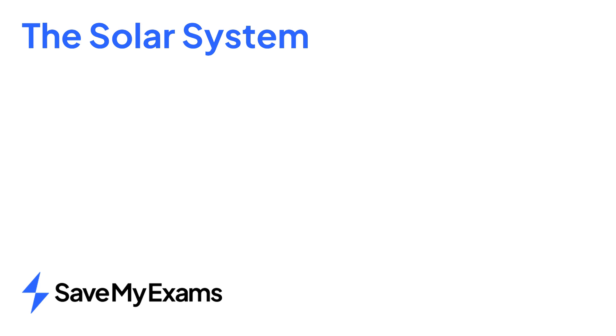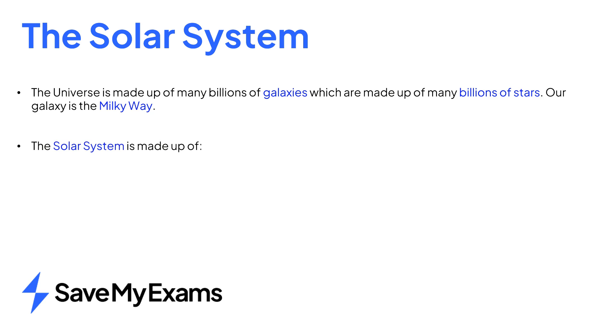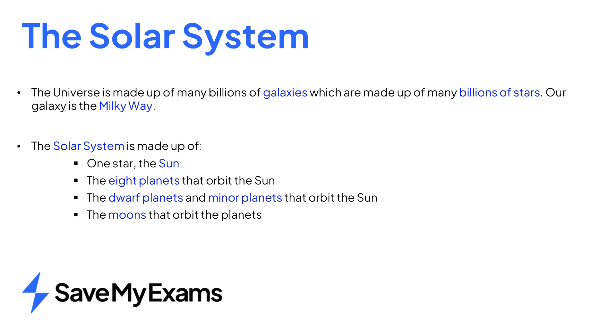In summary, the universe is a large collection of galaxies, and a galaxy is a large collection of stars. We live in the Milky Way galaxy in a solar system which contains the sun, eight planets, dwarf planets and minor planets, moons, and smaller objects such as comets.